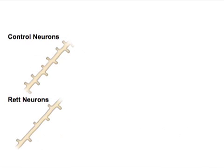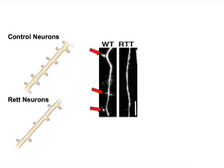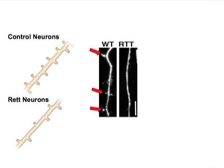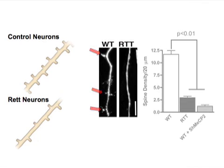Spine density was also reduced in Rett neurons. The number of spines, indicated here by red arrows, was measured after three-dimensional reconstruction of neuronal processes during confocal imaging. When we knocked down MECP2 in control neurons, we confirmed that the phenotype was specific to the loss of MECP2 expression.